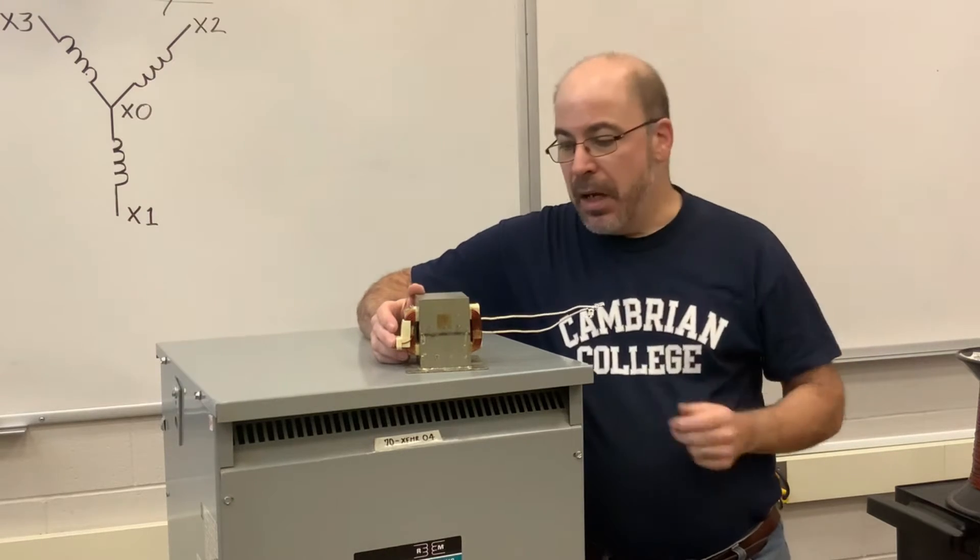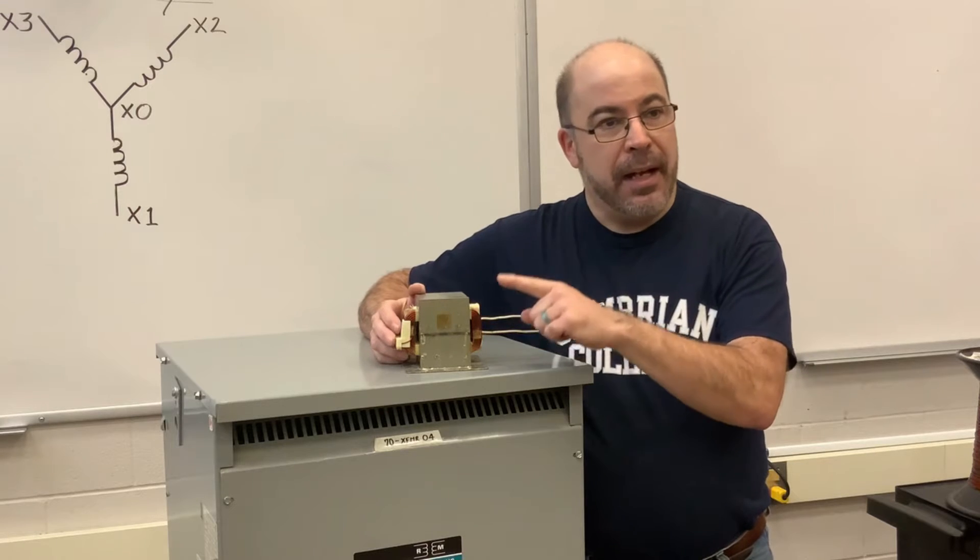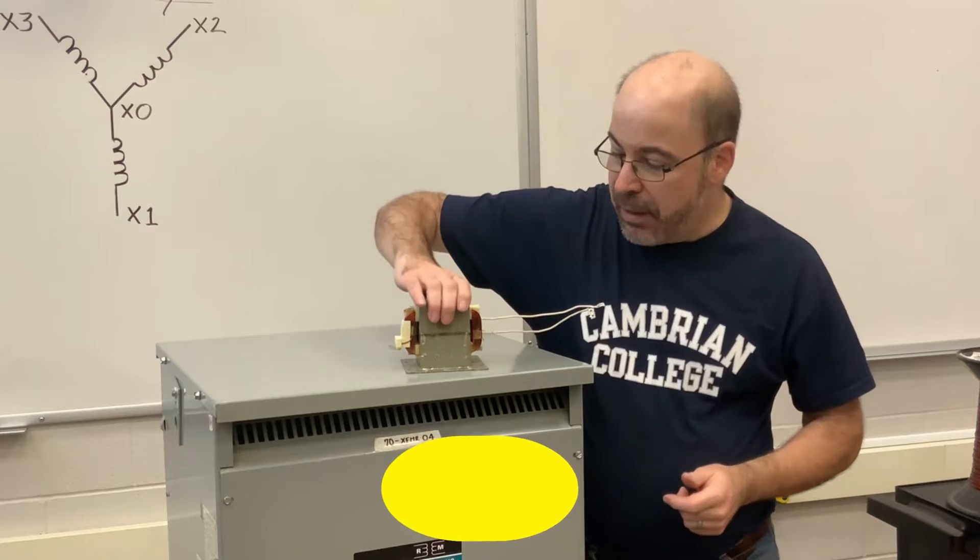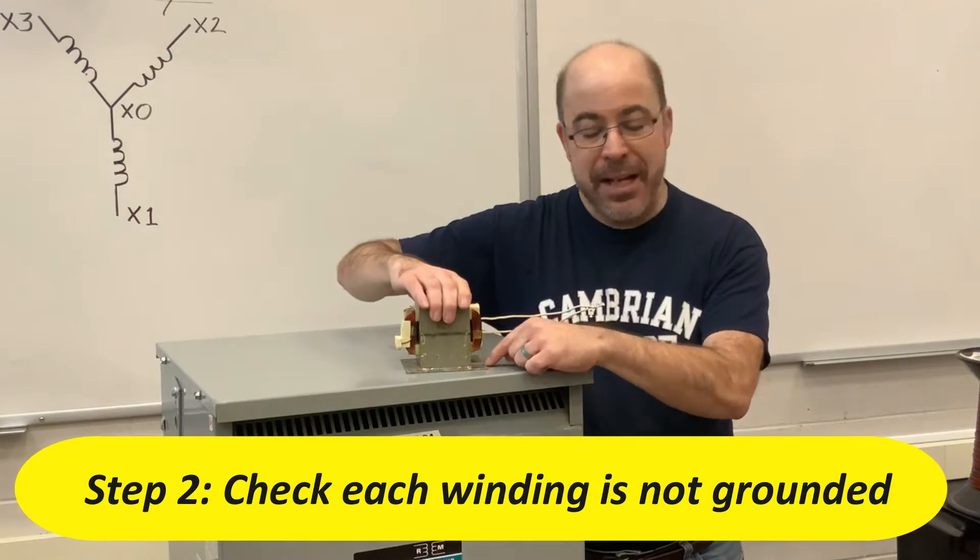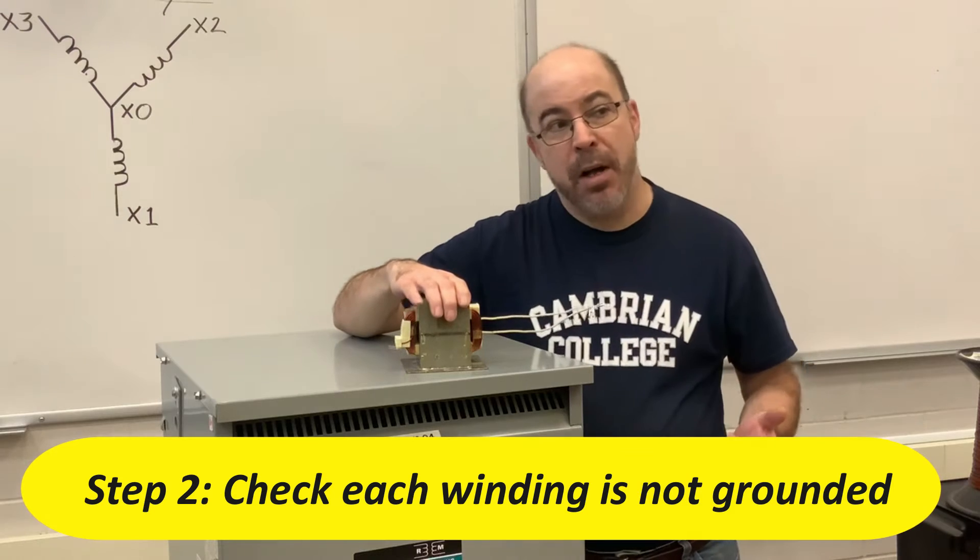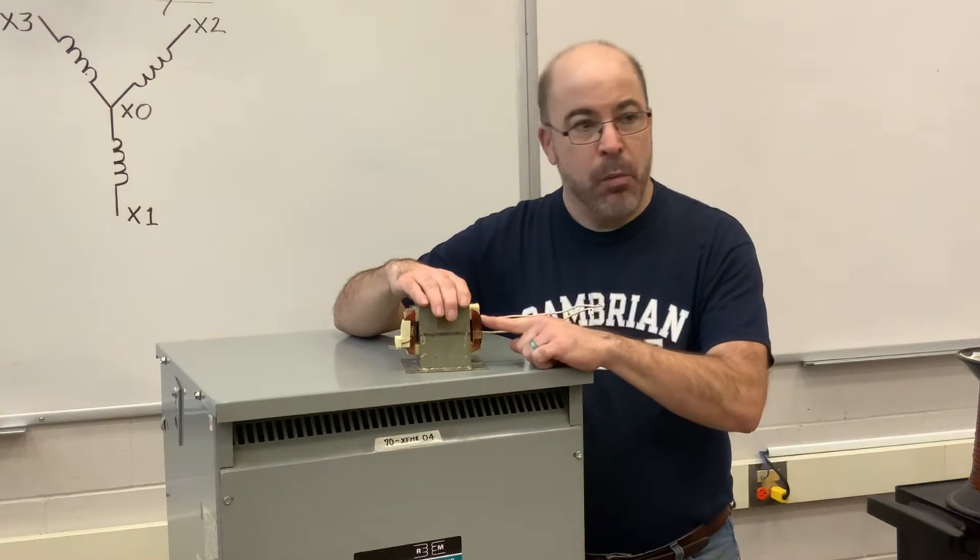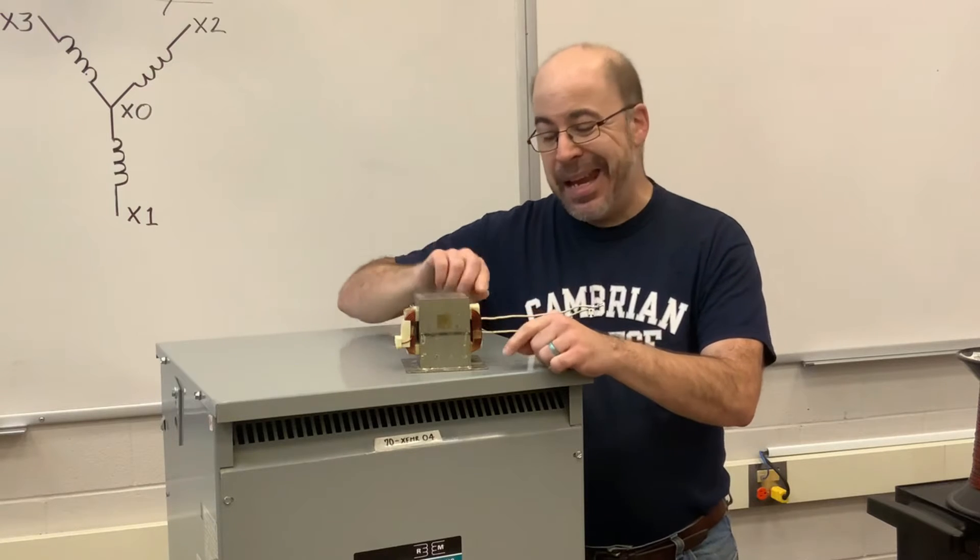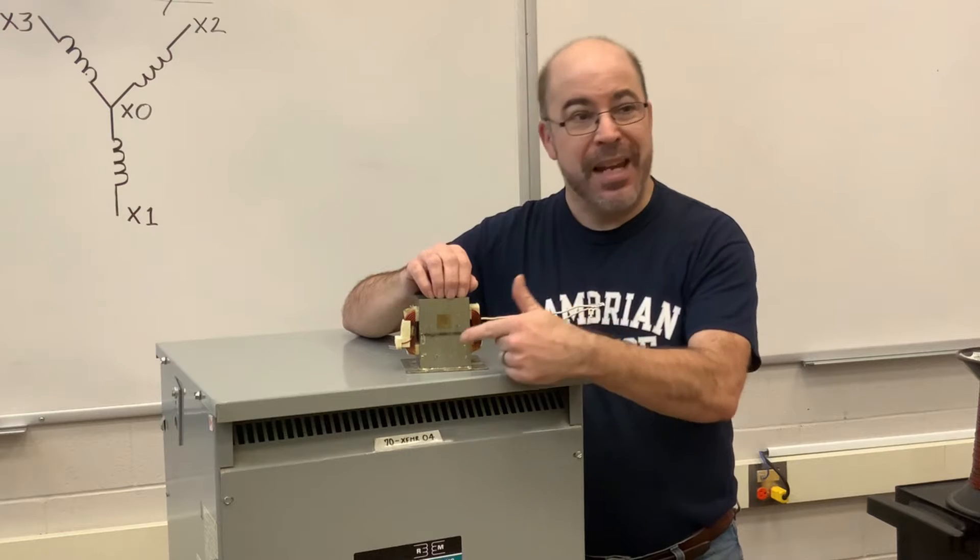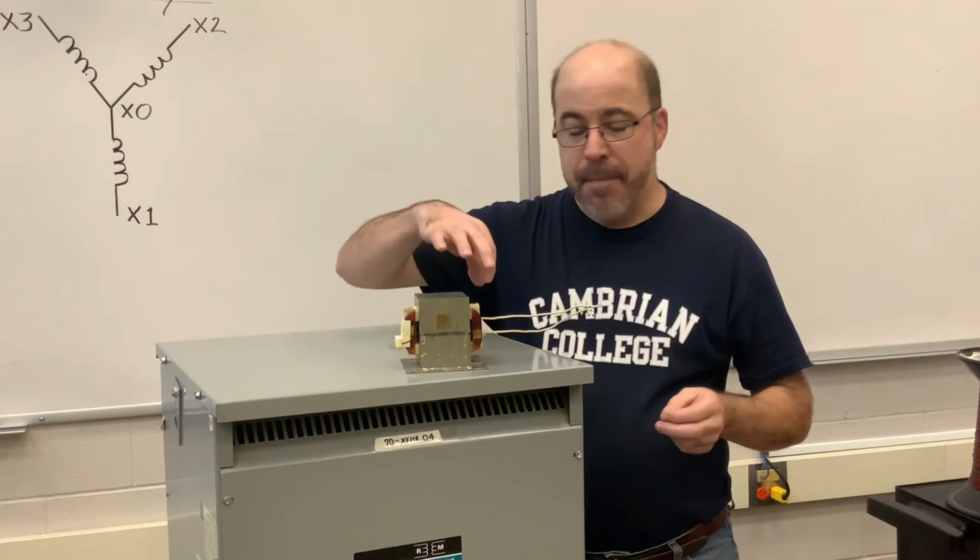Test number two. I want to make sure that these coils are electrically isolated from the core. The core is basically all this steel and it's going to be attached to a frame just like what we have here, and that's going to be bonded to a ground. I got to make sure that this winding, both primary and the secondary, that there's no continuity between here and ground. So that's going to be test number two and it will be performed on both coils.